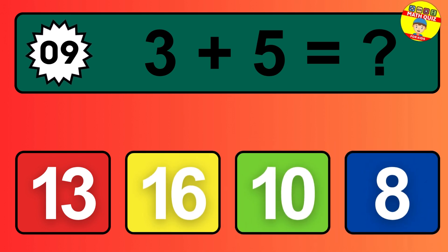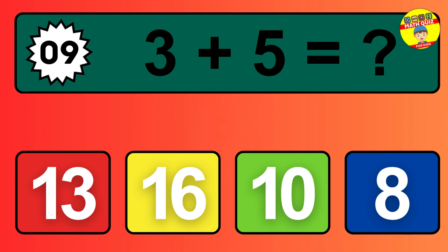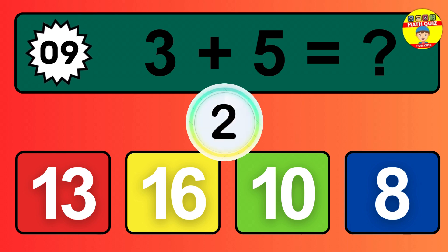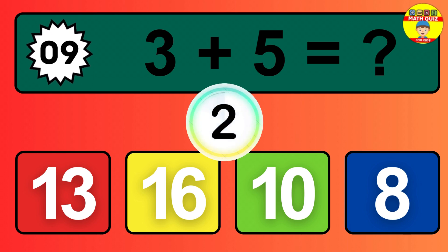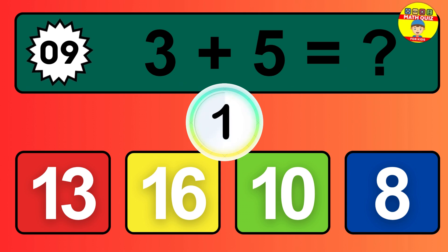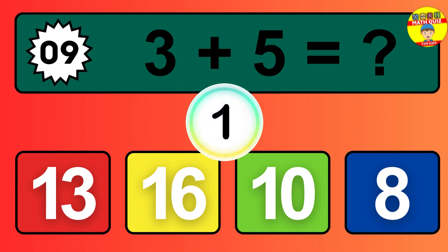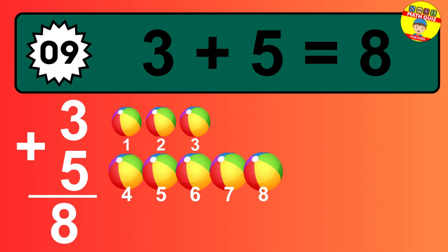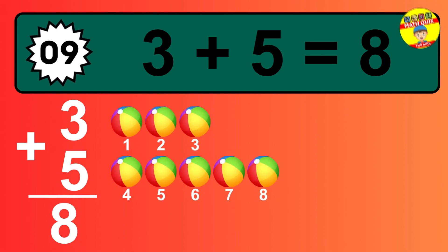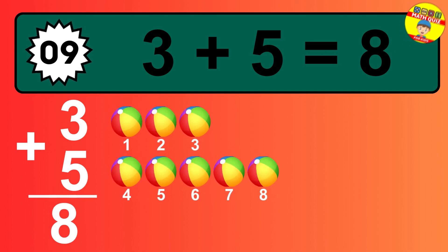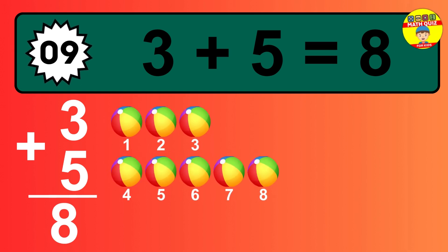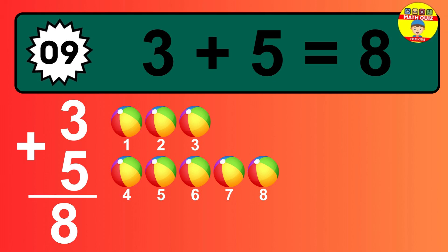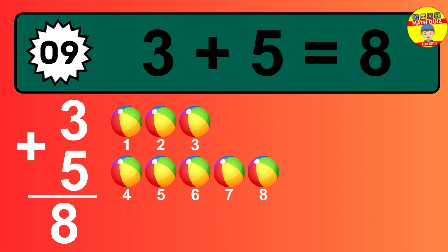Question 9. 3 plus 5 equals what? The answer is 3 plus 5 is 8. Let's count it. 1, 2, 3, 4, 5, 6, 7, 8.